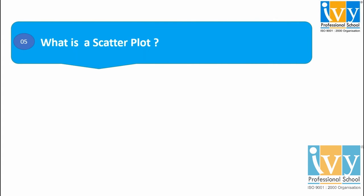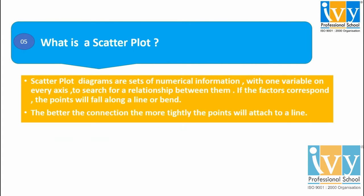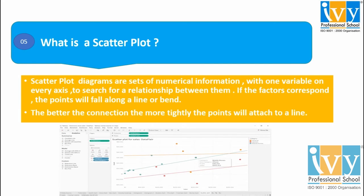Finally, question number 5: What is a scatter plot? A scatter plot is a diagram where we establish relationships between a set of numerical functions with one variable on each axis, searching for a relation between them. If the factors correspond, the points will fall along a line or curve. The more tightly the points cluster, the better the connection among them.